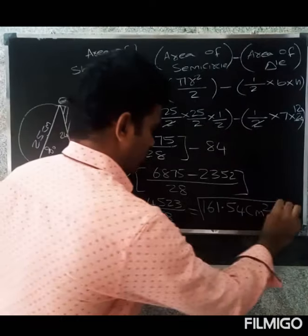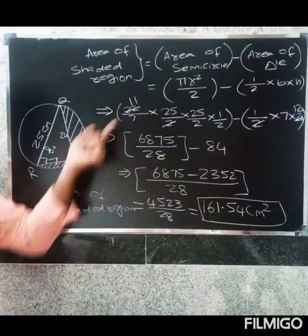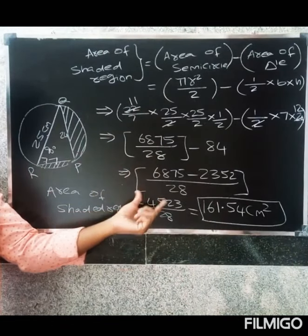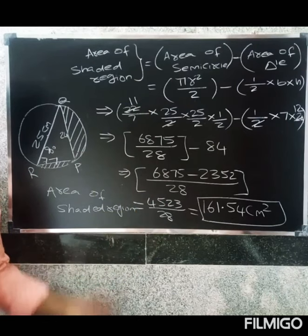Area of shaded region equals 161.54 cm squared. This is the simplification. Just be careful. Thank you.